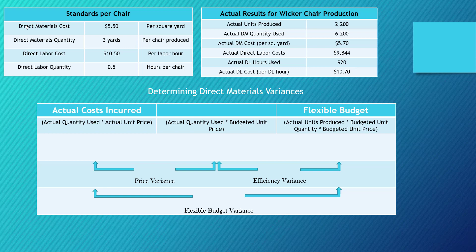Starting with our direct material variances, let's start with the actual cost that Dawson Incorporated incurred to produce chairs during the period. I'm going to take the actual quantity of direct materials used and multiply it by the actual unit price paid. We actually used 6,200 square yards of wicker at an average cost of $5.70 per yard, so Dawson spent $35,340 in material costs for actual production.